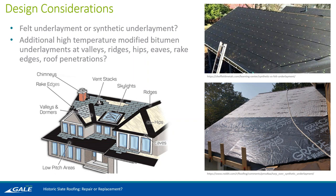It's particularly important to install modified bitumen underlayments under sheet metal elements at ridges, hips, valleys, and eaves, because the sheet metal elements of your roof will start to fail before the slate does. If we're talking 75 to 100 or more years for your slate to really start to fail, copper is never going to be able to last that long. So the modified bitumen underlayment gives you that extra layer of protection should your sheet metal start to fail down the line. It's very important to use a high-temperature modified bitumen product, particularly under sheet metal elements — the sun heating that sheet metal can heat it to a high temperature and that can start to melt lower-temperature modified bitumen products, causing dark streaks on elements below your roof.